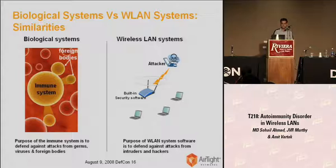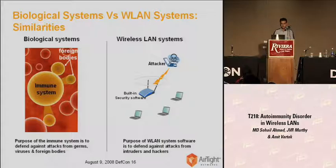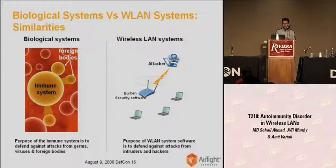Here is a biological system. There exists an immune system. The purpose of the immune system is to defend against attacks from viruses, germs, or foreign bodies. In the same way, in wireless LAN systems, the purpose of WLAN software or security software is to defend attacks against intruders or hackers. The job of the immune system is to keep foreign bodies away from healthy bodies. Similarly, the job of WLAN software is to keep unauthorized users or hackers away from authorized networks.